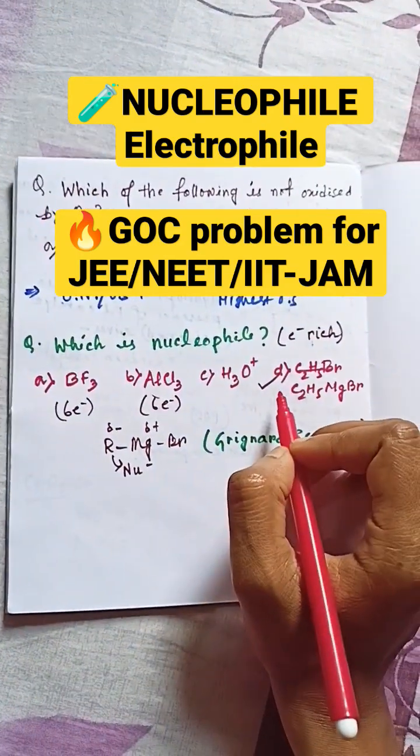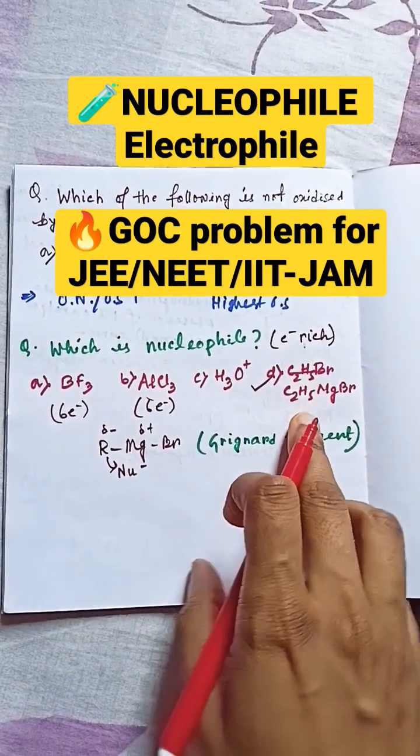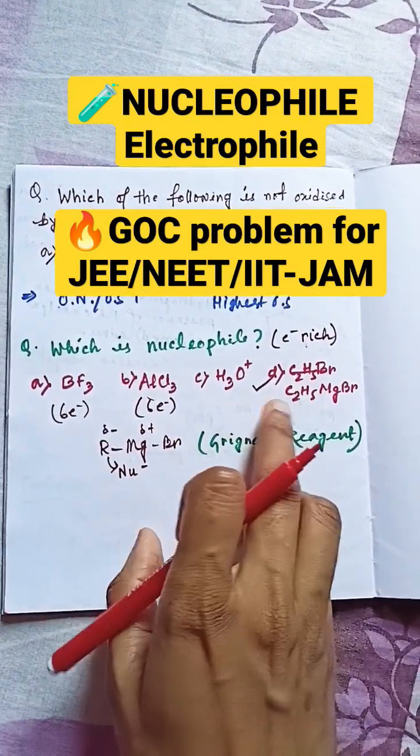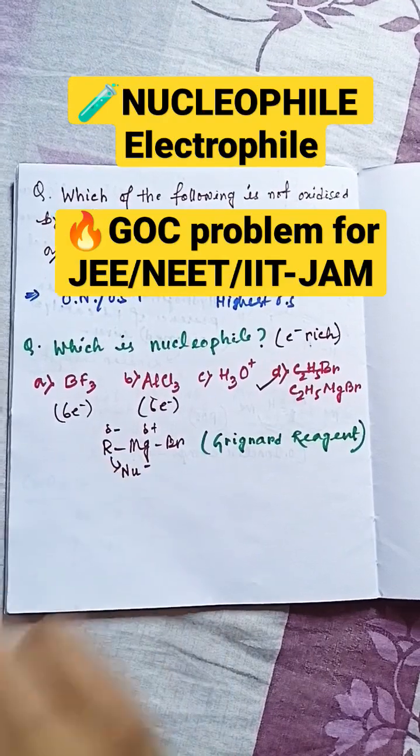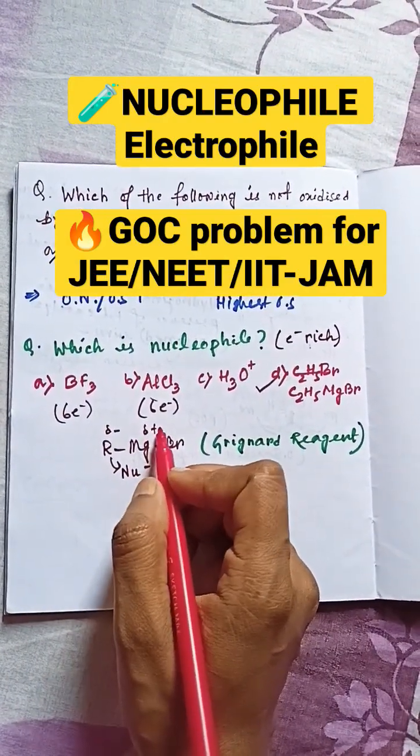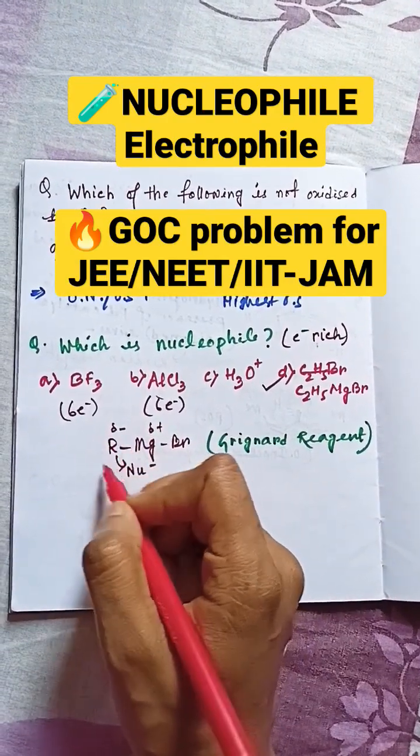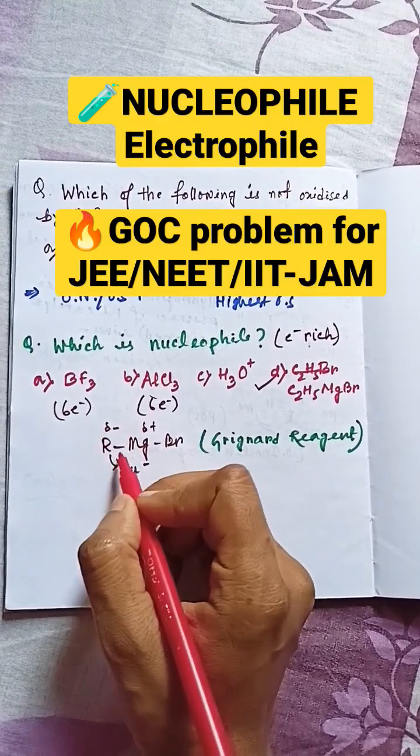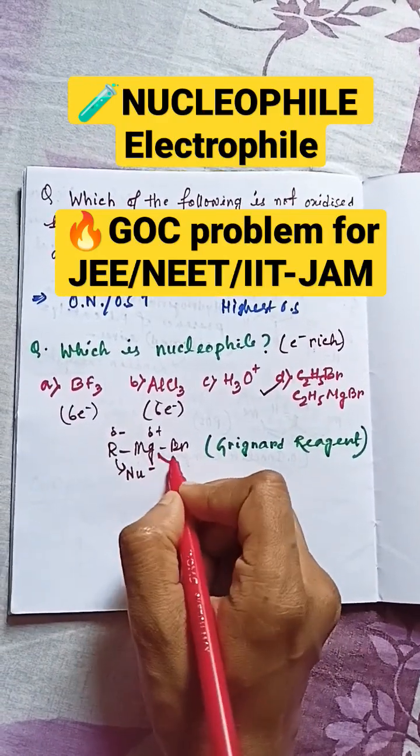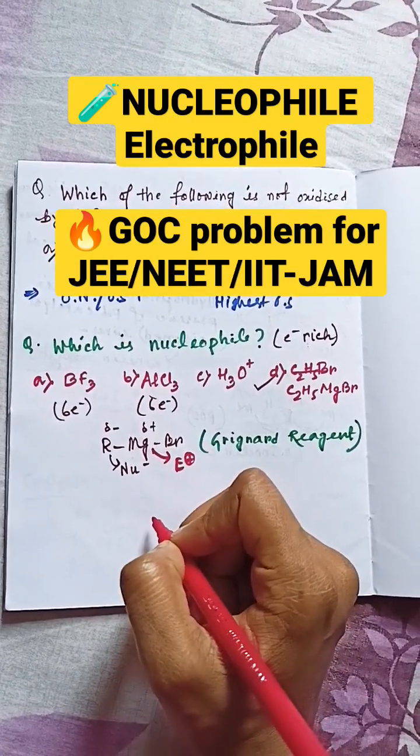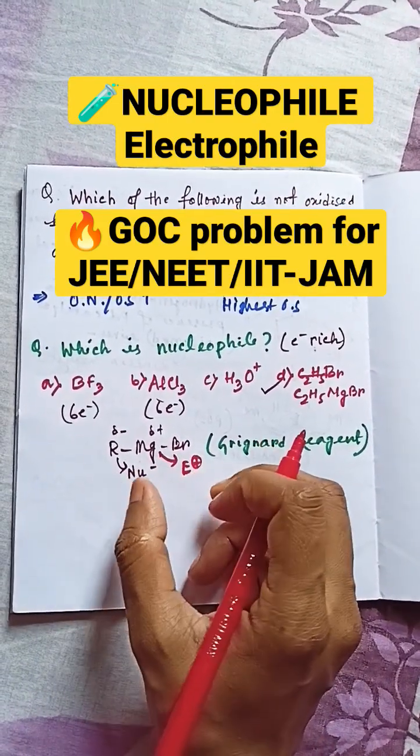But the fourth option is Grignard reagent - ethyl magnesium bromide. Suppose I am taking this ethyl as a normal alkyl R. Now see, since magnesium is electropositive, it gains the partial positive charge and the alkyl part gains this partial negative charge. So the negative part can act as nucleophile and this can act as an electrophilic center. So it can act as both nucleophile and electrophile.